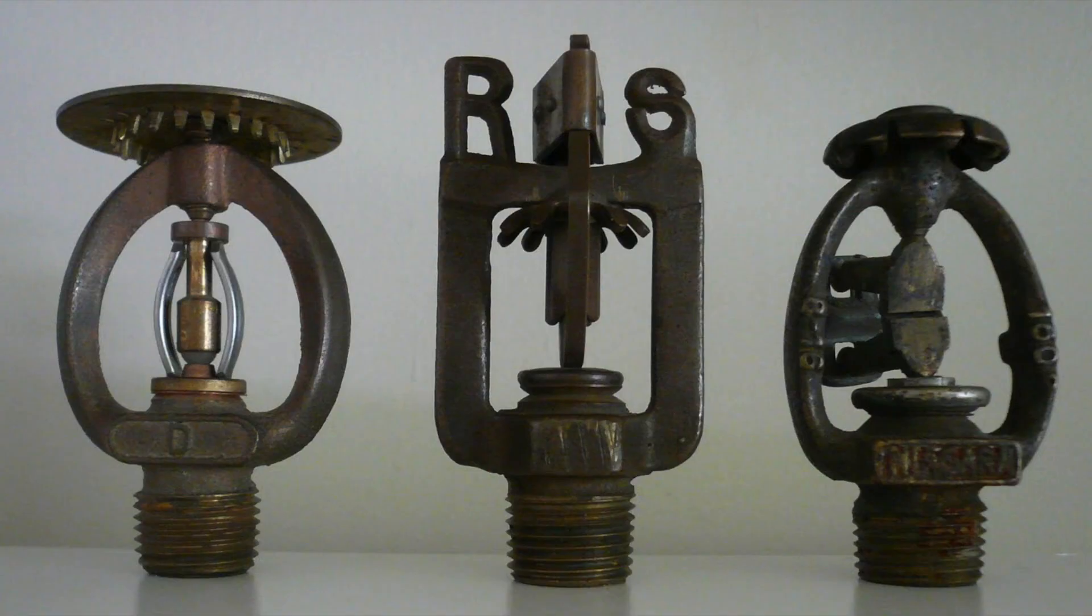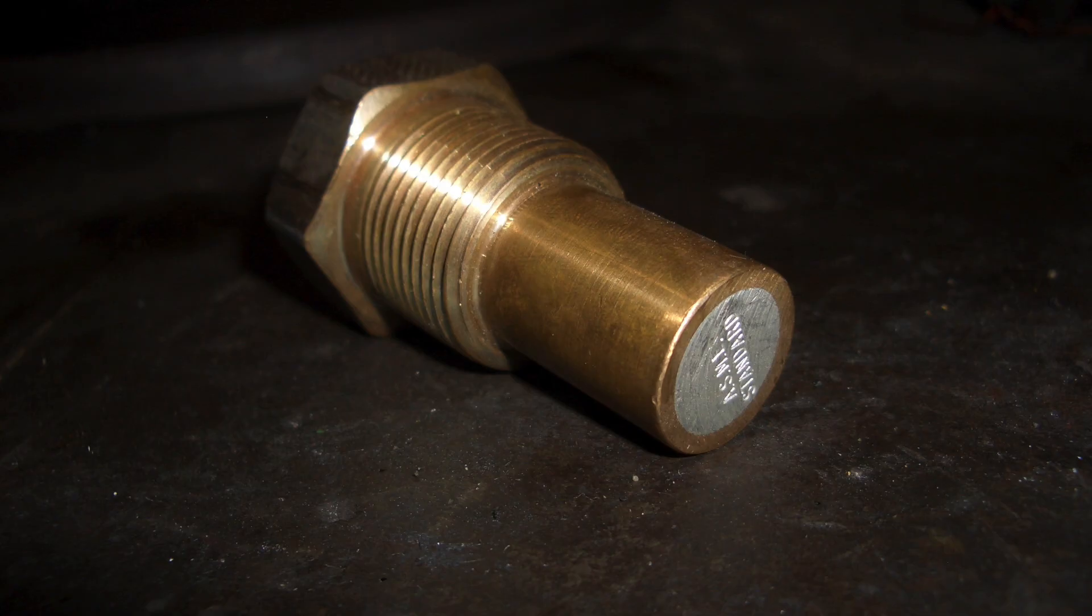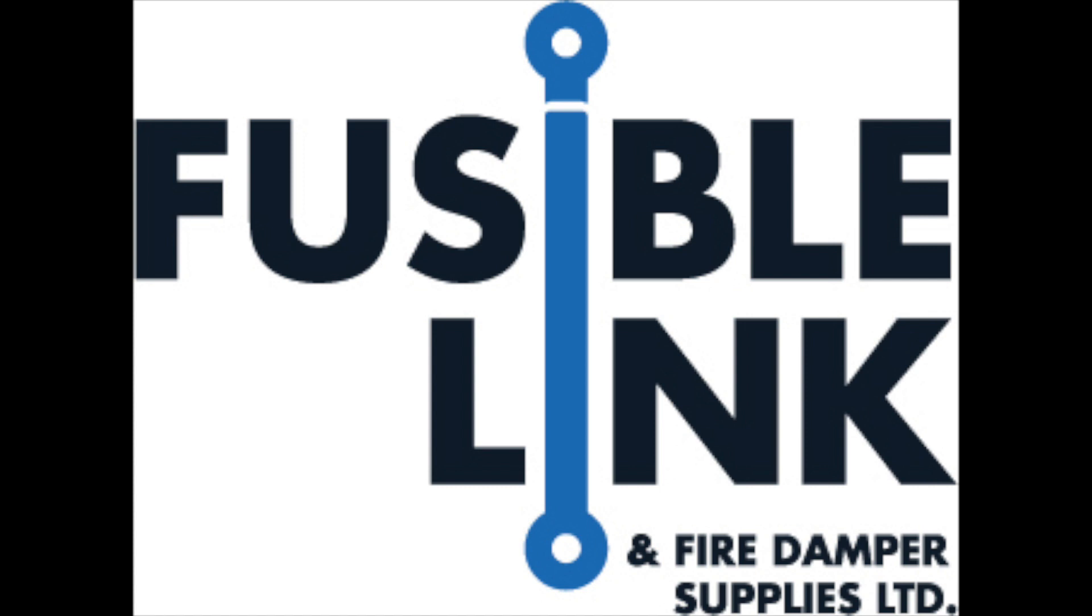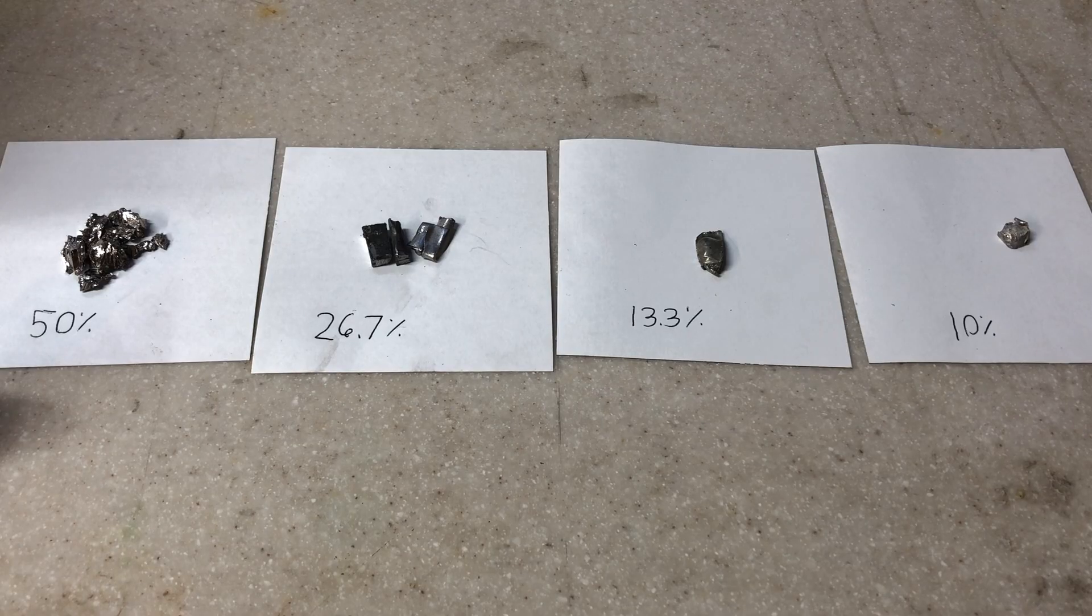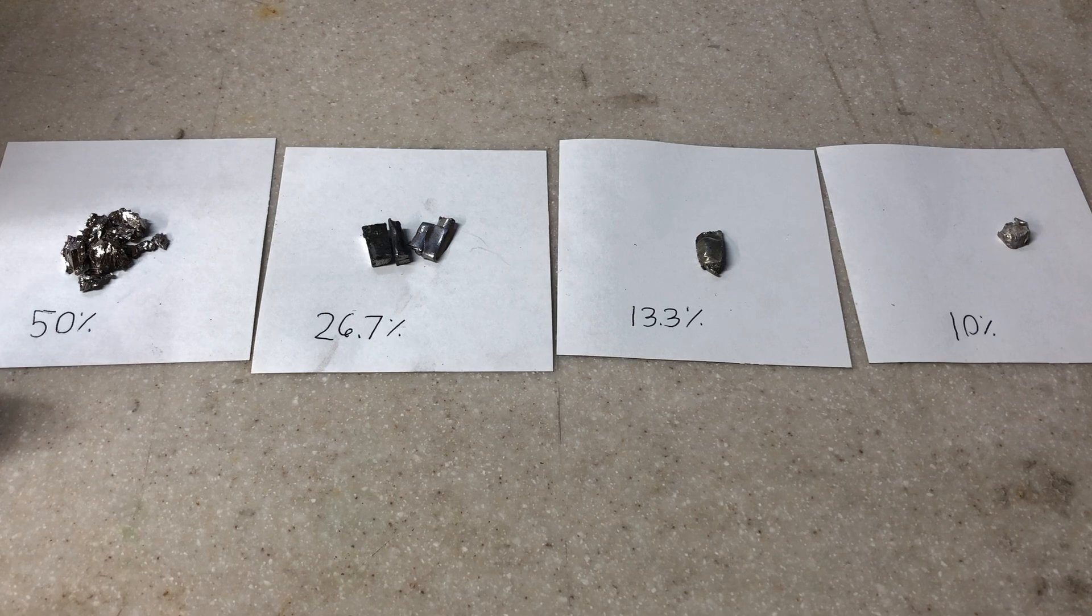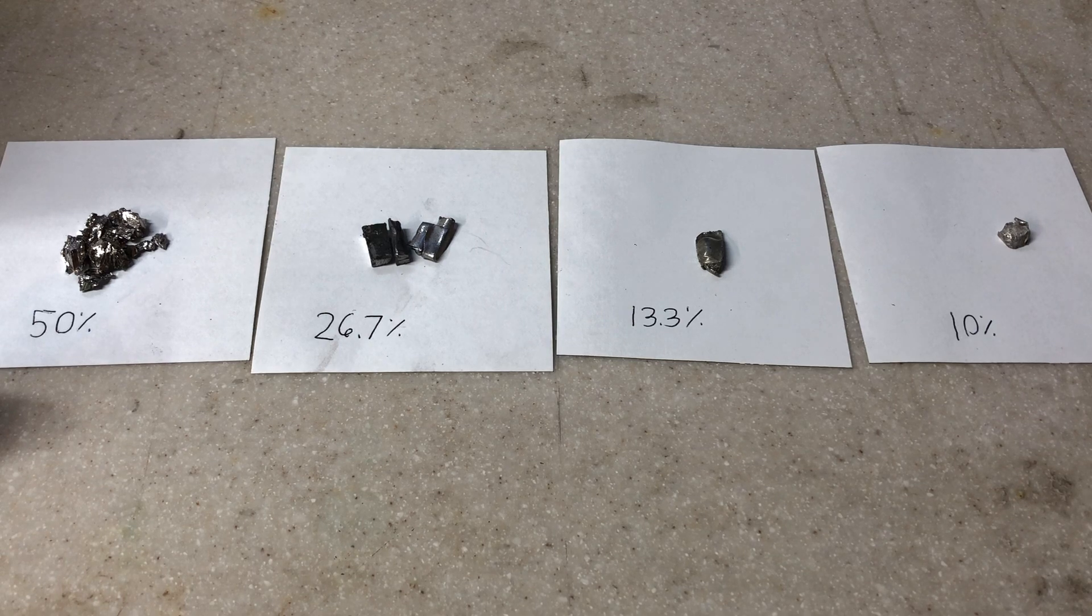Wood's alloy is commonly used in sprinklers and tanks containing gases. It has a low melting point, and during a fire it melts, relieving pressure or activating the extinguishing system. In Europe, it's very common to have Wood's alloy in air tanks or gas tanks.